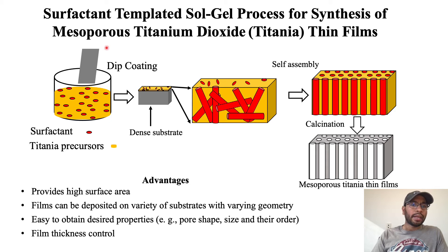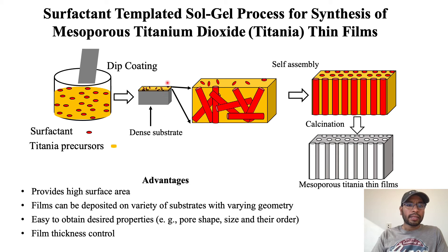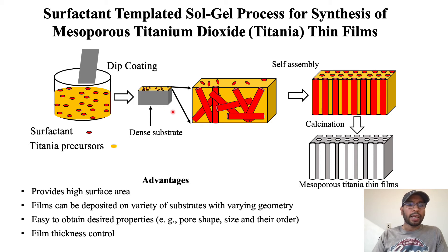A dense support, such as glass, is dip-coated, where the titanium thin film is formed. Then this film is aged at low temperature, such as 4 degrees Celsius, and controlled at high humidity, such as 94% relative humidity.